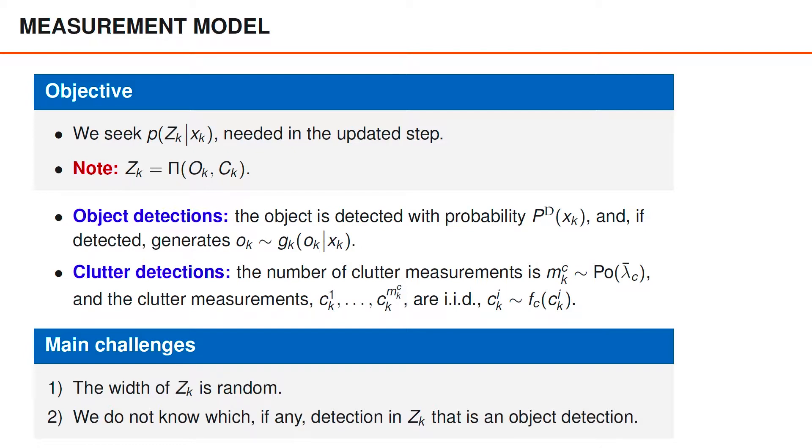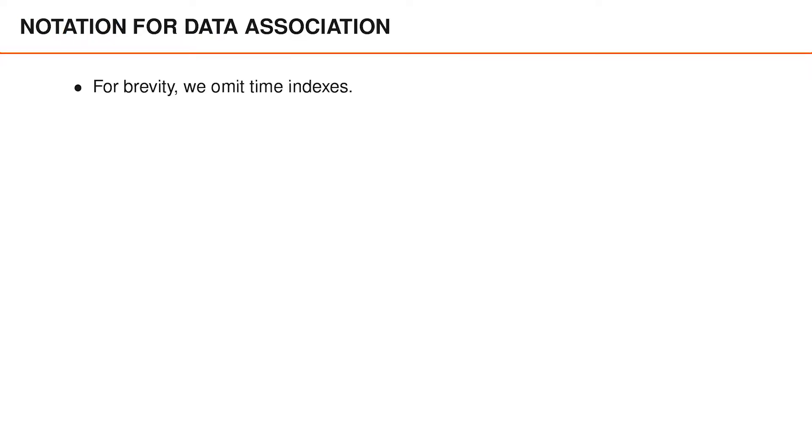It turns out that we need to consider all possible associations between measurements in z_k and the object. To understand this, let us introduce some notation. To make the notation slightly more compact, we omit the time index k, both in this video and the next.